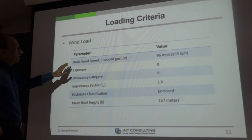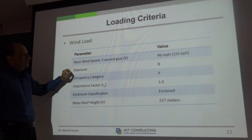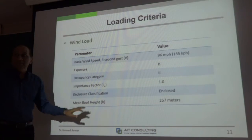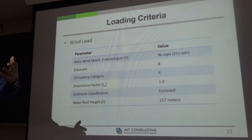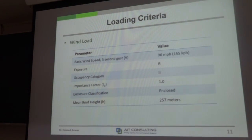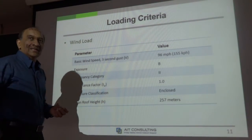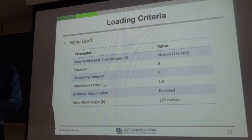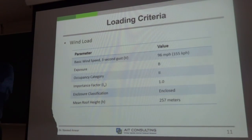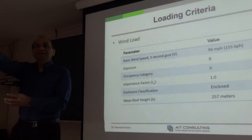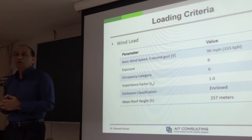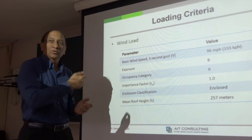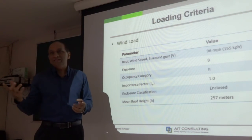For wind, you specify basic wind speed, exposure category, occupancy category, importance factor, and so on — all based on the code, using wind maps to determine wind velocity. This is interesting because if you build a building in open space and tomorrow other buildings are constructed around it, your exposure condition has changed. These are issues you cannot control, which is why you write them in the design criteria — that was your basis, and if it changed, it is not your fault.